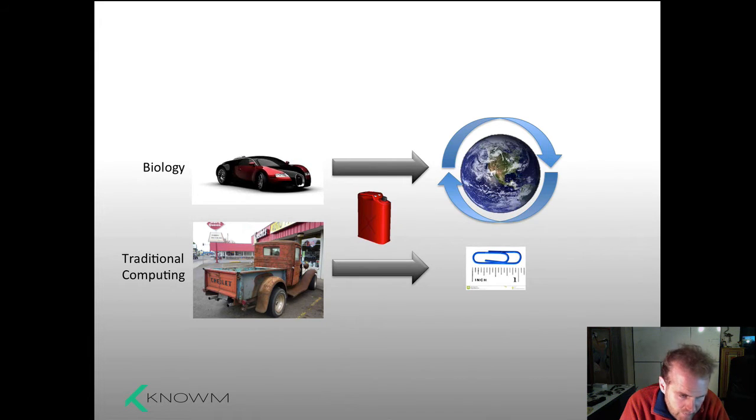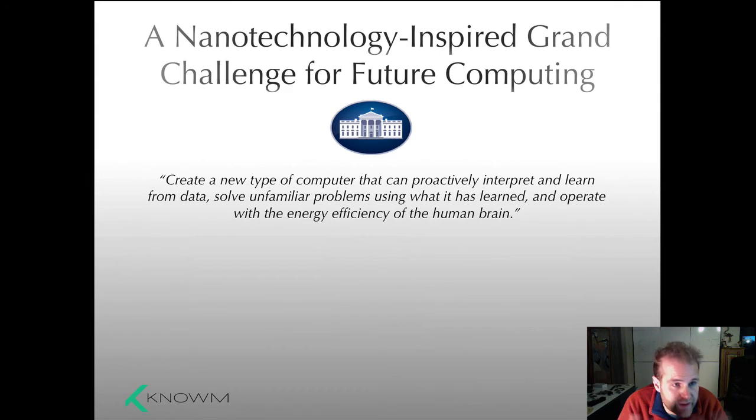I'm not the only one saying this. Just recently the White House has announced the Nanotechnology Inspired Grand Challenge for Future Computing. Effectively they're doing what I've been saying we need to do: create a new type of computer that can proactively interpret and learn from data, solve unfamiliar problems using what it has learned, and this is the key part—operate with the energy efficiency of the human brain. Everybody likes to say human brain, but what they mean is biology, any biological brain. Solving that problem opens up a massive universe of possibilities. What we're going to be able to accomplish when we actually look at the efficiency of our intelligent machines and hone in on that—what we're going to be able to create is going to be truly phenomenal.